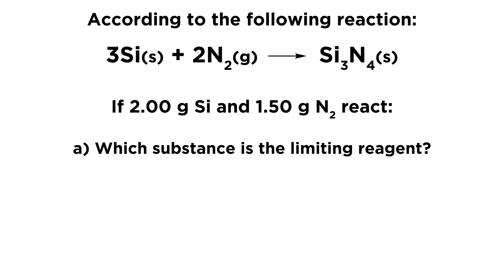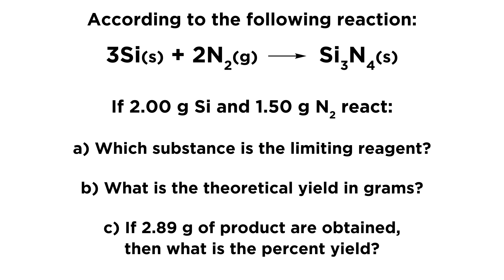if 2.00 grams of silicon and 1.50 grams of nitrogen react, first, which substance is the limiting reagent? Then, what is the theoretical yield of our product in grams? And lastly, if 2.89 grams of product are actually obtained, then what is the percent yield of the reaction?